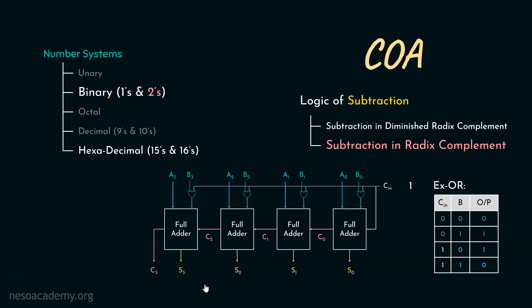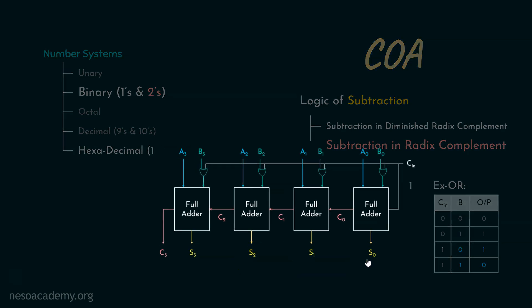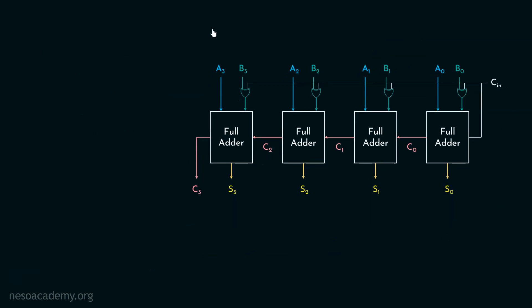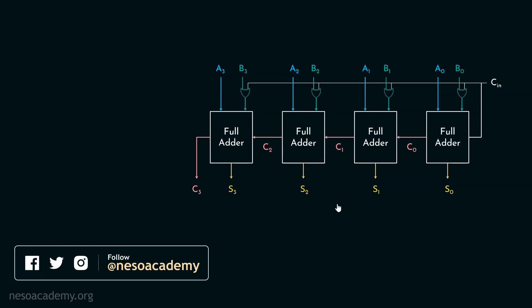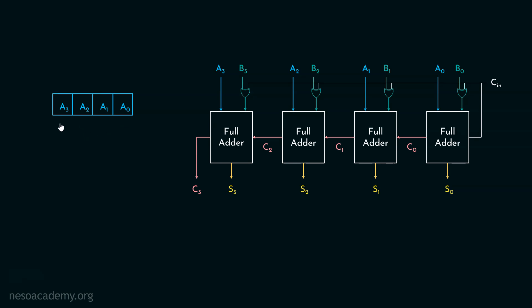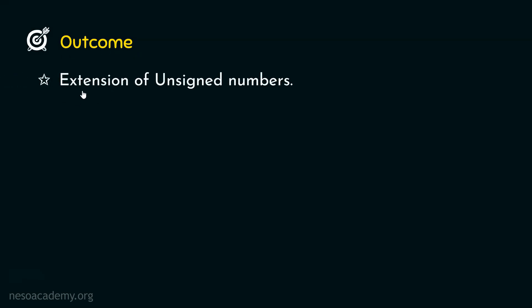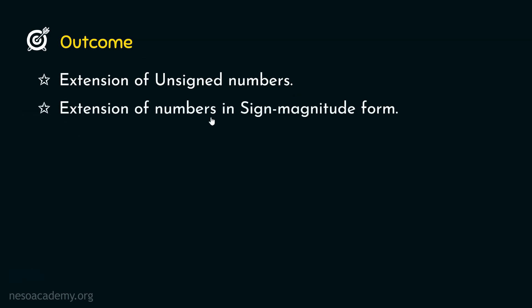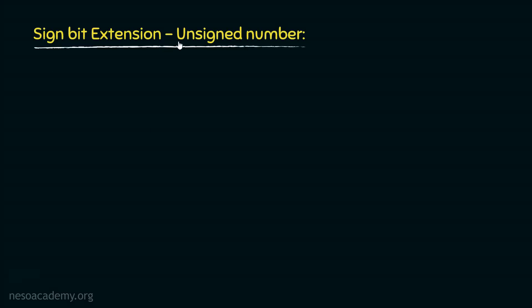That was all about the adder-subtractor circuit. Coming to the inputs, these are fed into the circuit individually but are not kept that way — they are actually stored in different registers. For example, A will be stored in a 4-bit register where A0 is at the least significant place, followed by A1, A2, and A3. Similarly, we will have another 4-bit register for B. Our computers have registers of different sizes. Today we will observe how we can transfer data from a register to a register of a different size. We will first observe the extension of unsigned numbers, and thereafter the extension of numbers in signed magnitude form.